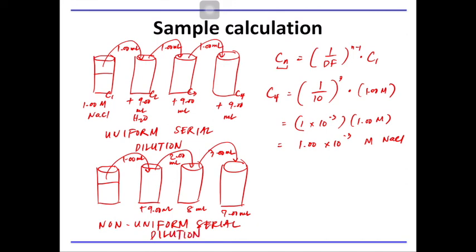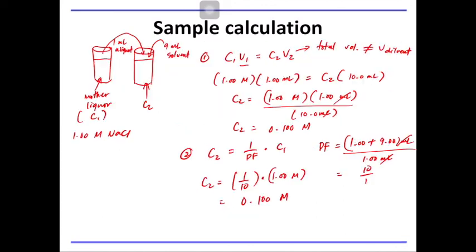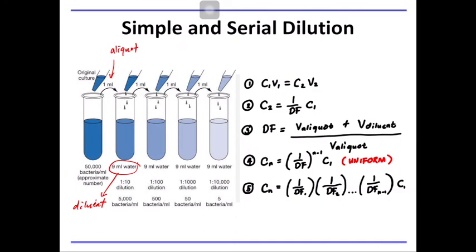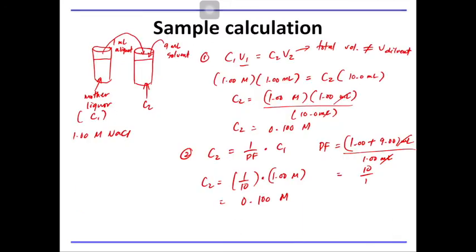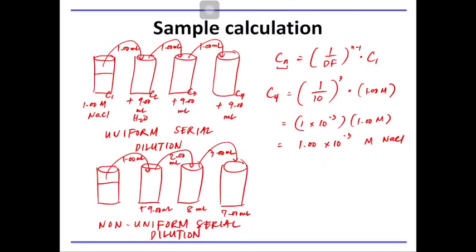How do we perform the calculation for this? The formula has been given previously. Cn equals 1 over DF1 times 1 over DF2, so on and so forth until we arrive to the last dilution and finally multiply it by the original concentration. So in this case, C1 is this one, C2, C3, C4.